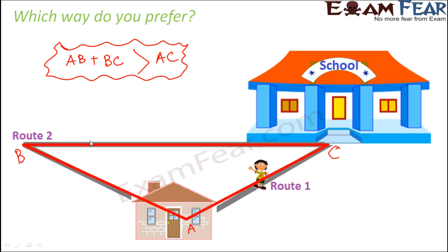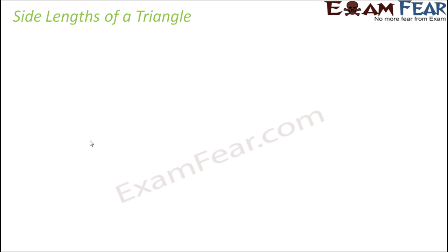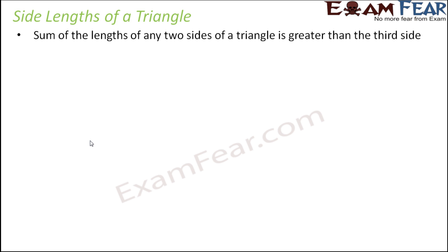This leads us to a very important property of any triangle, which is what we are going to learn in this section: the sum of two sides of a triangle is always greater than the third side. This property about the side lengths of a triangle states that the sum of the lengths of any two sides is always greater than the third side.